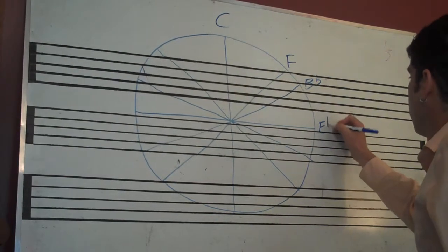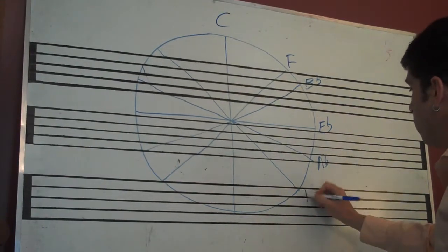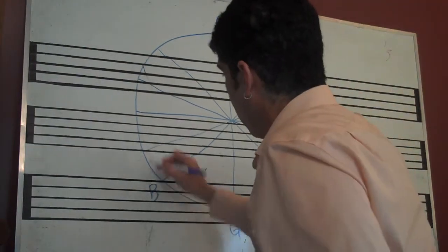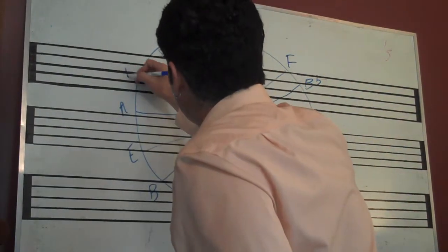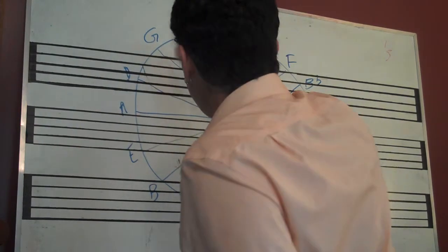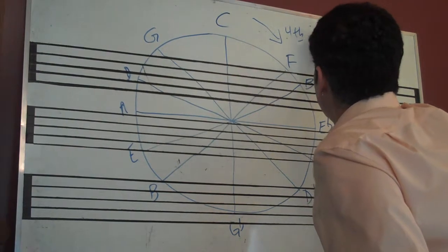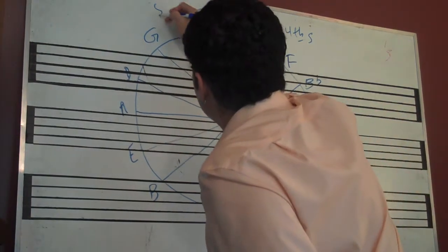Hopefully you've memorized this or are pretty close to memorizing it by now. We already discussed that this way is fourths, this way is fifths.